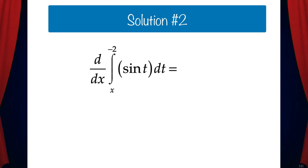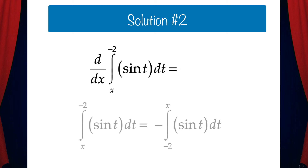For this next problem, notice that the x is the lower limit of integration. But in order to use the second fundamental theorem, x needs to be an upper limit of integration. So let's use an integral property: the integral from x to negative 2 of sine t dt equals negative the integral from negative 2 to x of sine t dt. And the derivative is negative sine x.